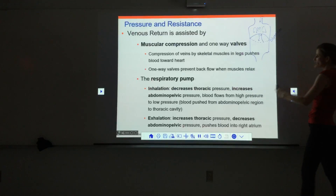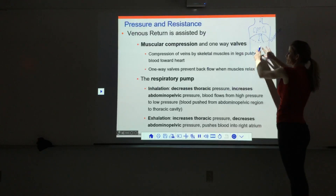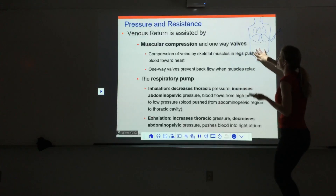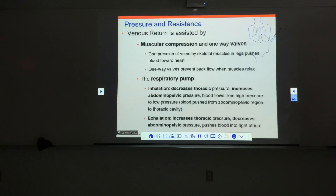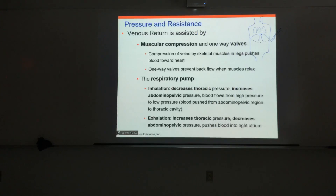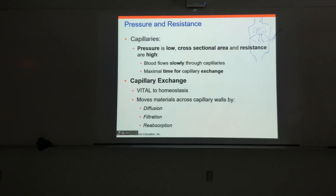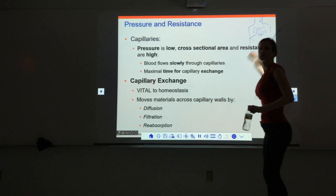The one-way valves and muscular compression help us get blood up the legs, then the respiratory pump helps us get it through the torso and back up into the heart. Both of those help out with the low pressure in the veins. So finally we get to capillary pressure.